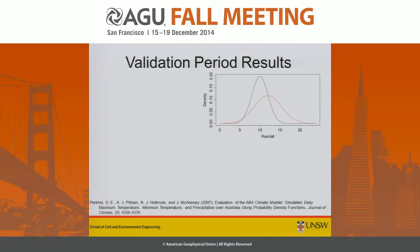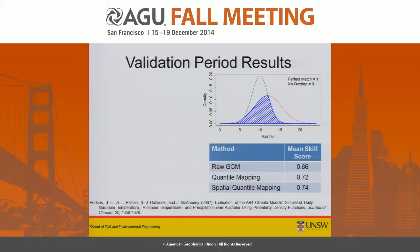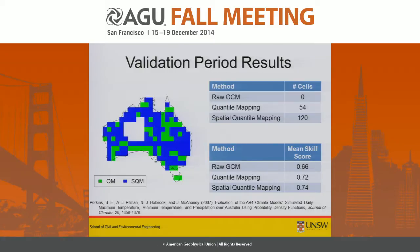I also looked at how things improve across the full distribution of monthly rainfalls using a skill score that Sarah Perkins developed for daily rainfalls. It compares two PDFs to see how much they overlap — a perfect match gives a score of one, no match gives zero. The mean skill score across the country for the spatial quantile mapping approach is higher than for standard quantile mapping, so we are improving the distribution as a whole. At the vast majority of individual grid cell locations, shown as blue cells on the map, including information from the surrounding cells definitely improves performance.